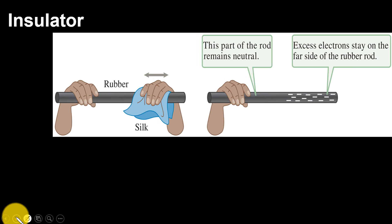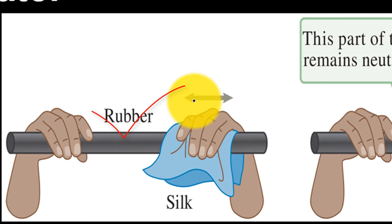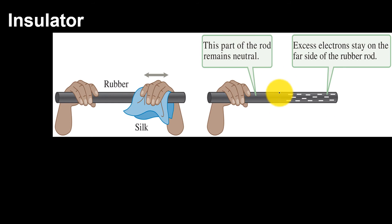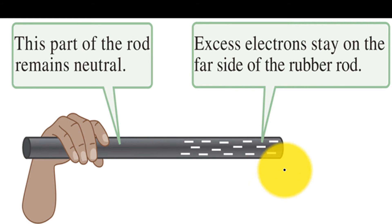In insulators, for example rubber, electrons do not move freely. When a surplus of charged particles, positive or negative, builds up on some part of an insulator, the excess always remains there. So if you hold one end of rubber rod while far end is being rubbed with silk, the far end of the rod will acquire a surplus of electrons, and those electrons will remain at that end. They won't flow into your hand.